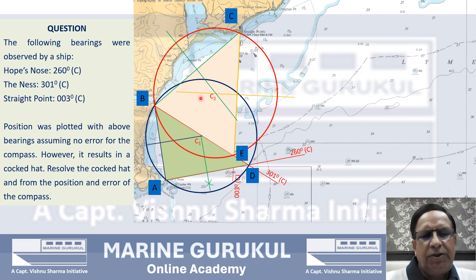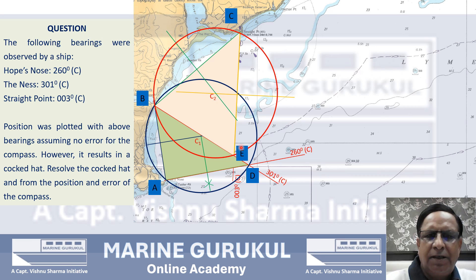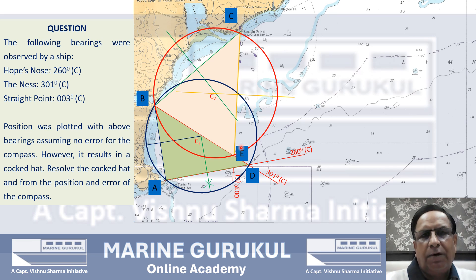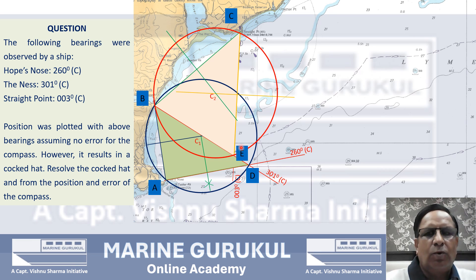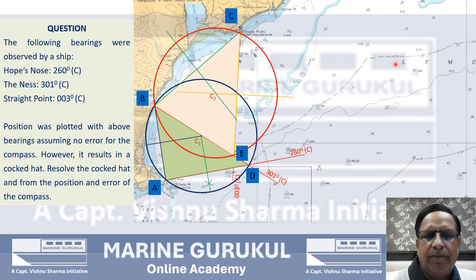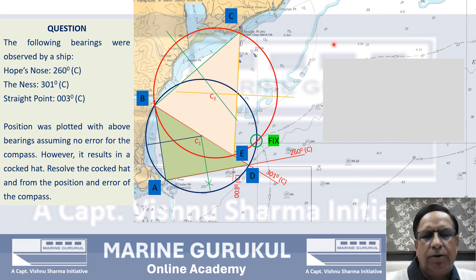We avoided taking perpendicular bisectors of BD and BE because they are common to both triangles but with different lengths — bisecting them twice for each pair would be confusing. Where the two position circles intersect is the fix of the ship, and we can transfer the latitude and longitude of this fix onto the answer sheet.